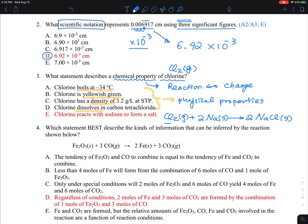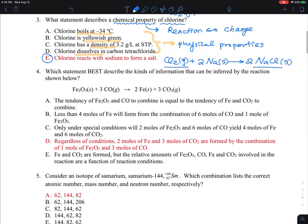What it means is this is a chemical transformation of chlorine gas into salt, and that's what we call the chemical properties. So E is the answer.